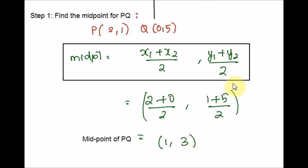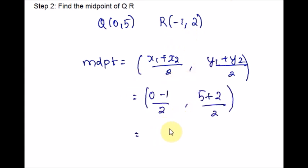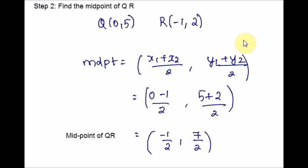Following the same formula, let us find the midpoint of QR. X1 is 0, Y1 is 5, X2 is negative 1, and Y2 is 2. Please note that there is a negative sign before 1, so be careful while plugging in negative numbers. The midpoint of QR is negative one-half comma seven over two. I am keeping the fractions as they are, not converting to decimals.